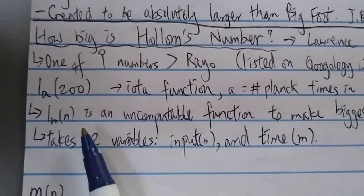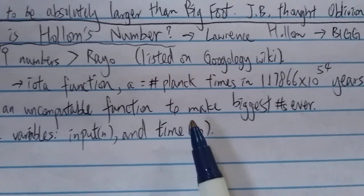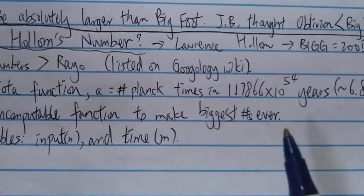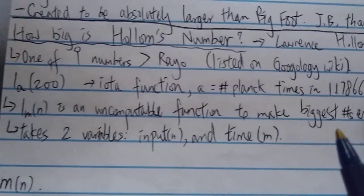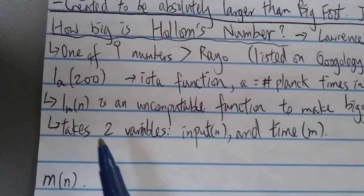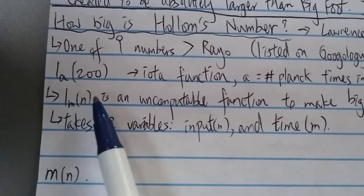So what is this again? Basically, it's an uncomputable function that is trying to make the biggest numbers ever, and it takes on two variables. As you can see here, i is the function, so it takes on two variables m and n.